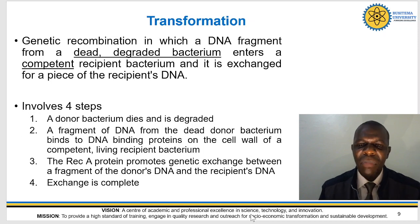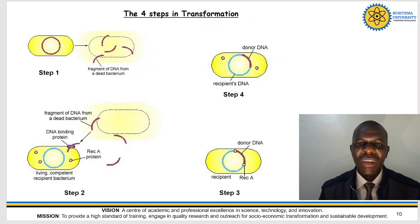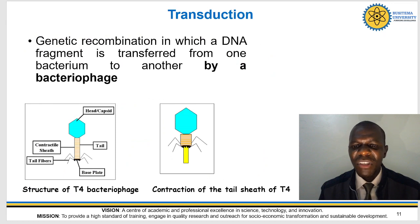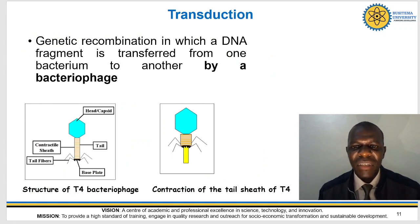The key points here are: dead degraded bacterium, competent recipient bacterium. I've put some illustrations which I'm not going to spend a lot of time going through, but they show what happens in the different steps. That's really about transformation. The next mechanism is transduction, where you have genetic recombination in which a DNA fragment is transferred from one bacterium to another by a bacteriophage.